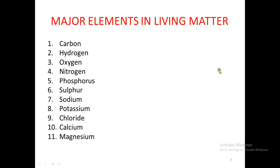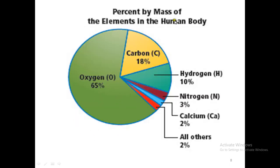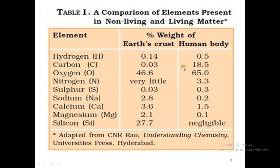The major elements found in living matter are: carbon, hydrogen, oxygen, nitrogen, phosphorus, sulfur, sodium, potassium, chloride, calcium, and magnesium. When we look at the human body, we find that the major part is made of oxygen — 65 percent. Carbon is 18 percent, hydrogen is 10 percent, and besides these three major elements, we also find nitrogen, calcium, and other minerals.